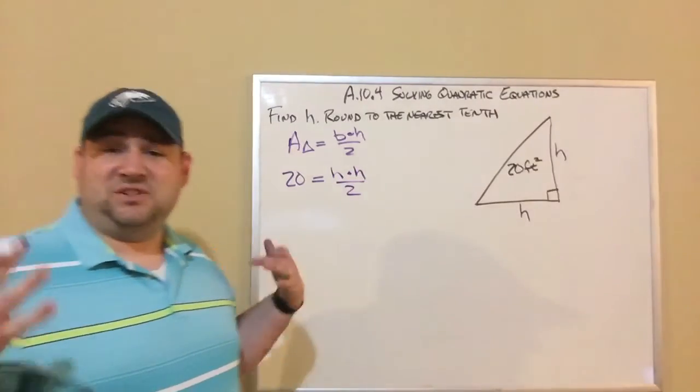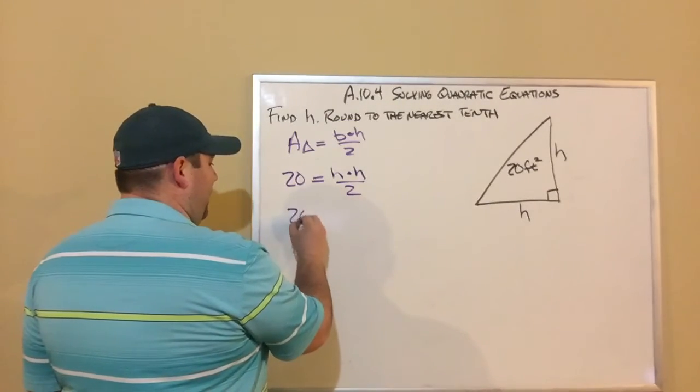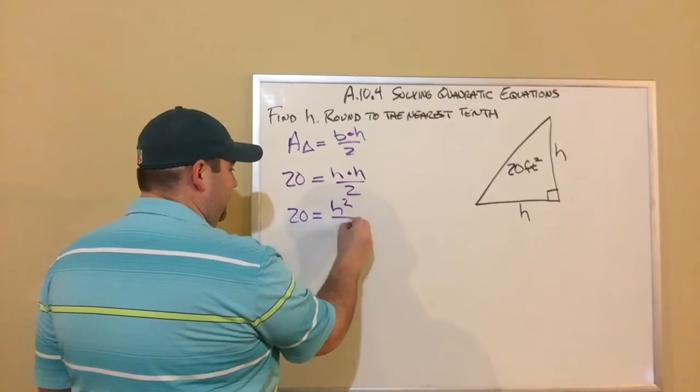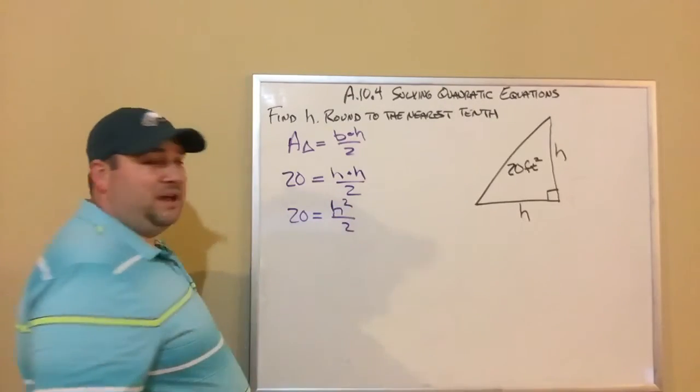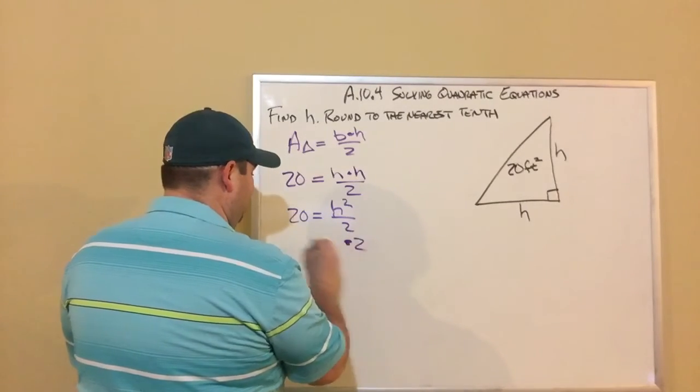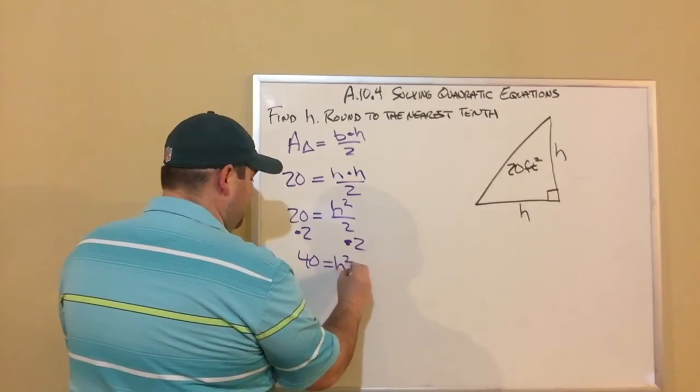So now I'm going to solve this equation. I'm going to solve it for H. There's a couple things right away. H times H is H squared and that's over 2. So now I want to solve for H. So the first thing I'm going to do is multiply by 2 to get rid of that divided by 2. So now it's 40 equals H squared.